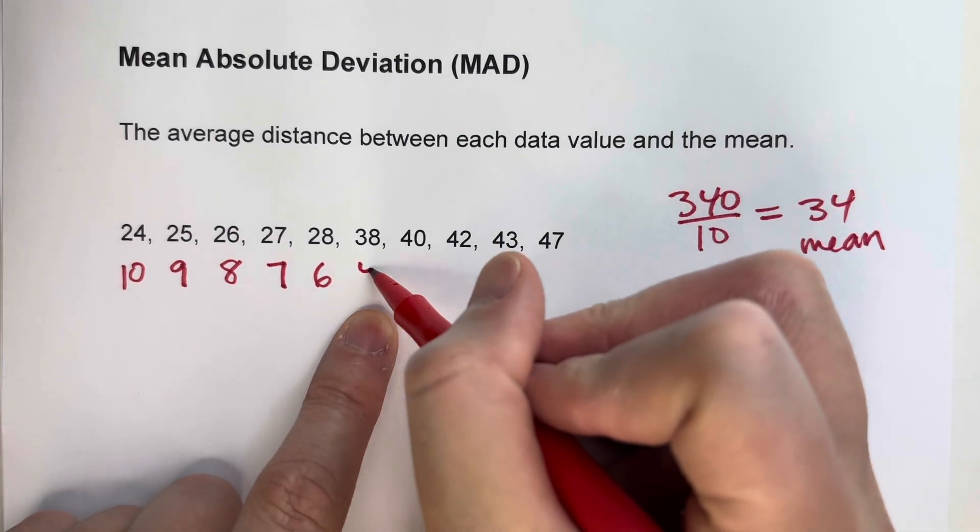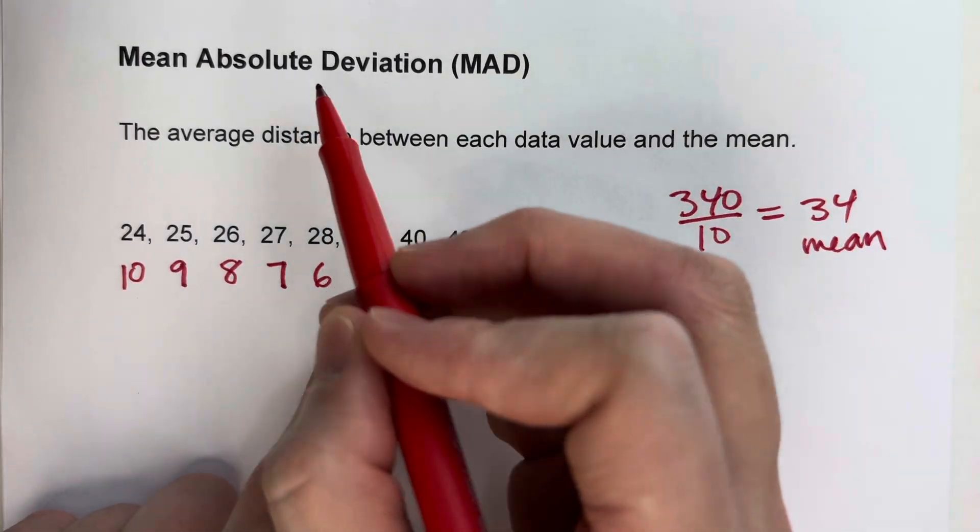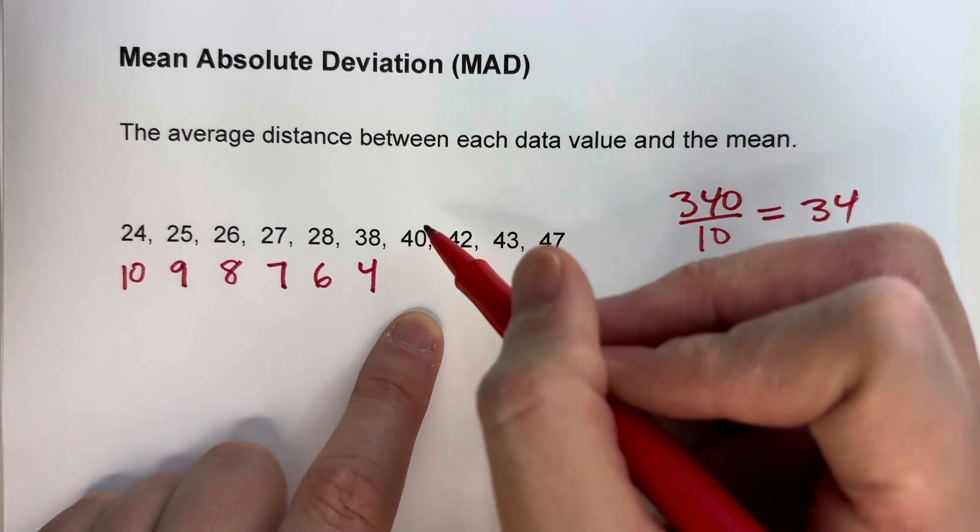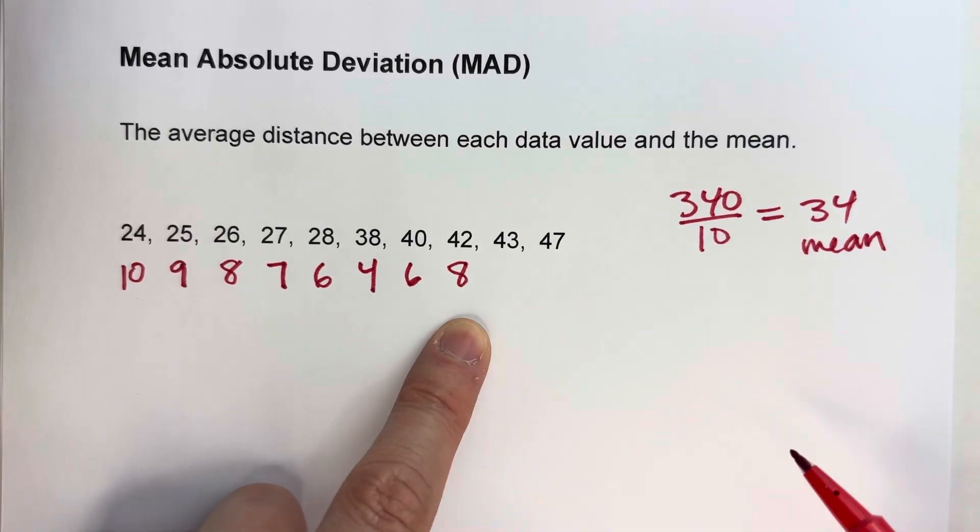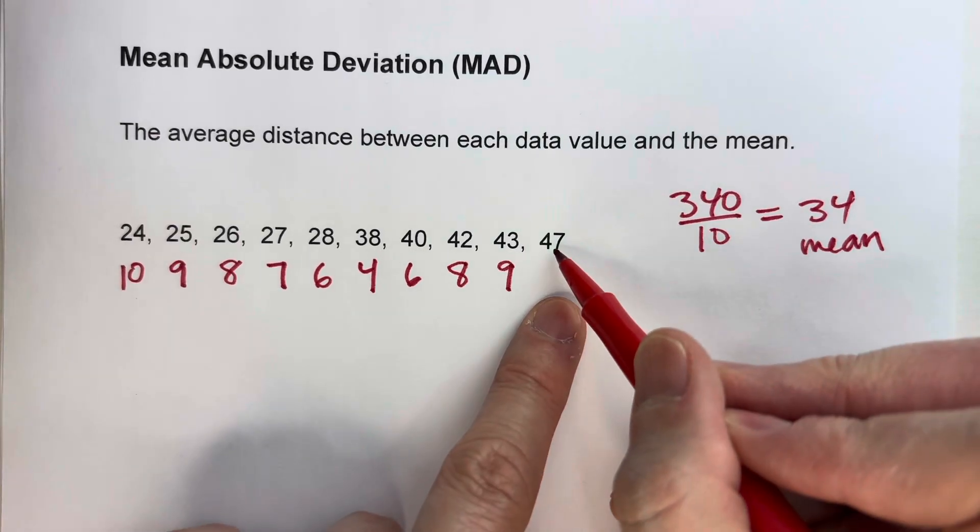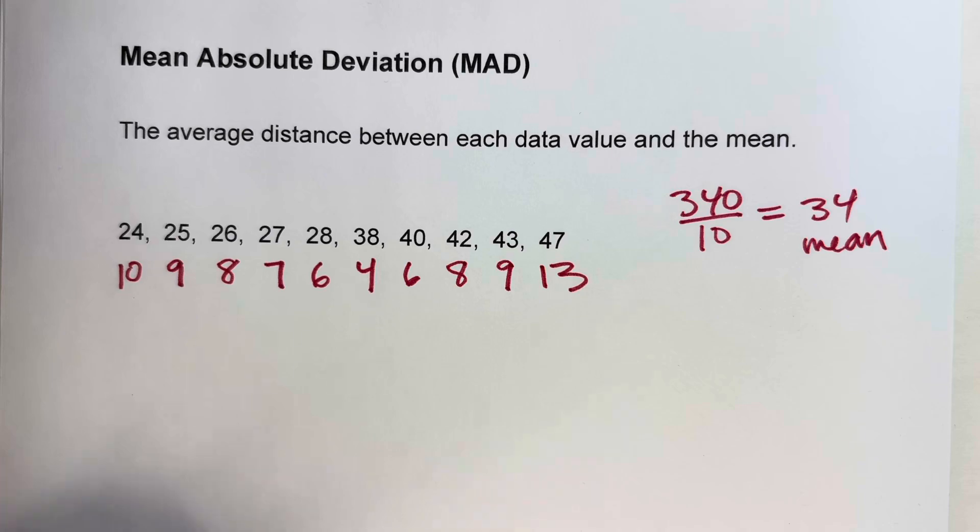Now, 38 and 34, those are 4 away. Even though that's 4 above, it doesn't matter because we're talking about absolute deviation. 40 and 34, that's 6 away. 42 and 34, that's 8 away. 43 and 34, they're 9 apart. And 47 and 34, they're 13 apart. So those are all our absolute deviations.